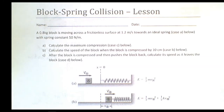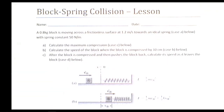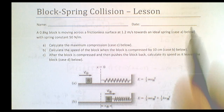In this tutorial we're going to look at block-spring collisions that occur in a horizontal direction, not vertical — we'll get into vertical ones later. The problem involves a 0.8 kilogram block moving across a frictionless surface at 1.2 meters per second, moving towards an ideal spring with a spring constant of 50 newton meters.